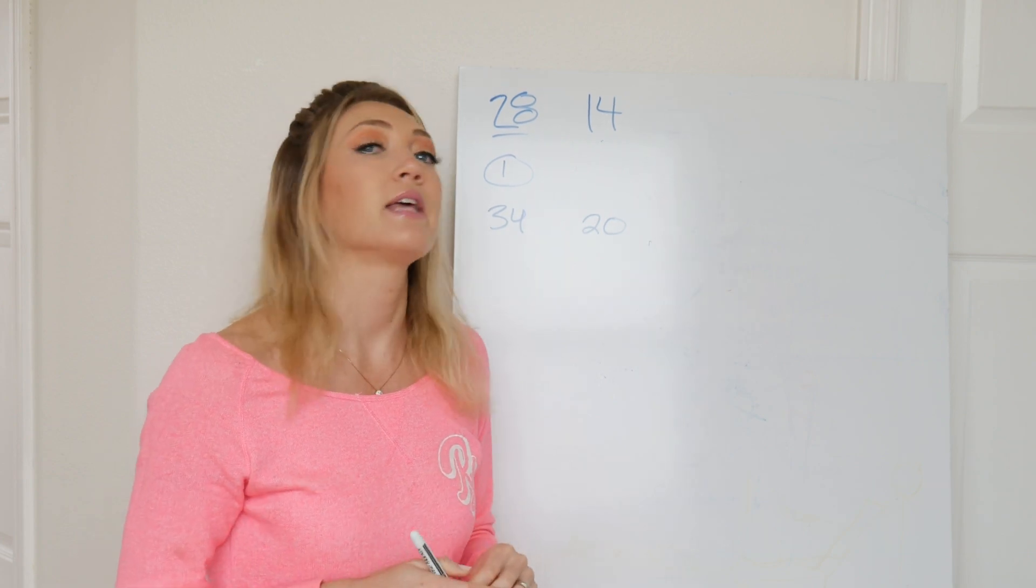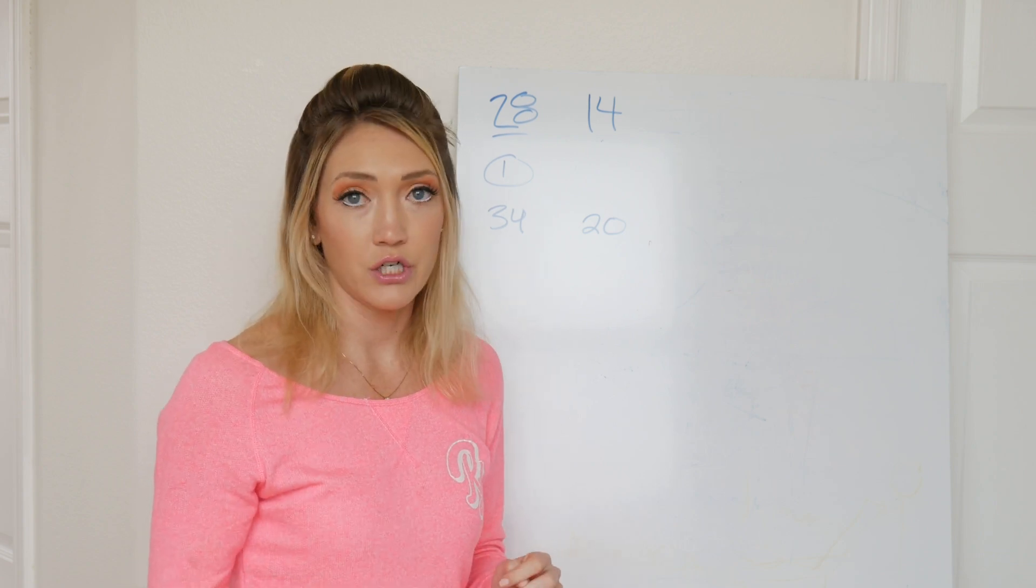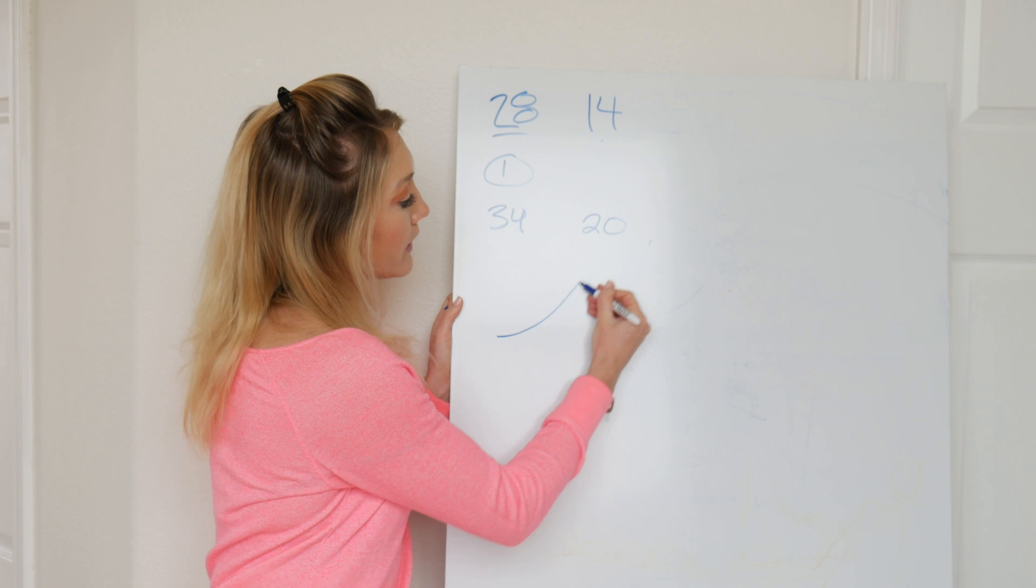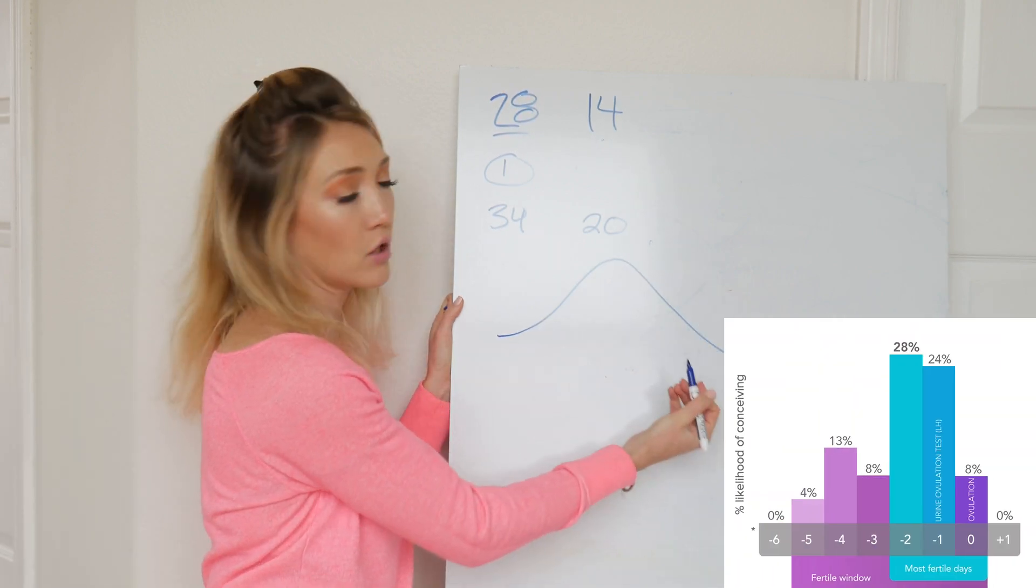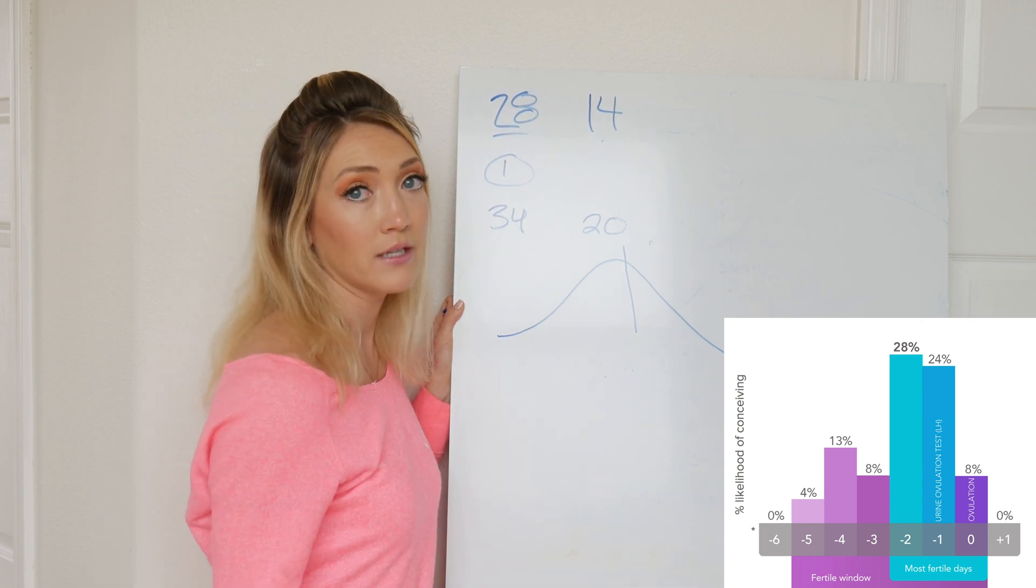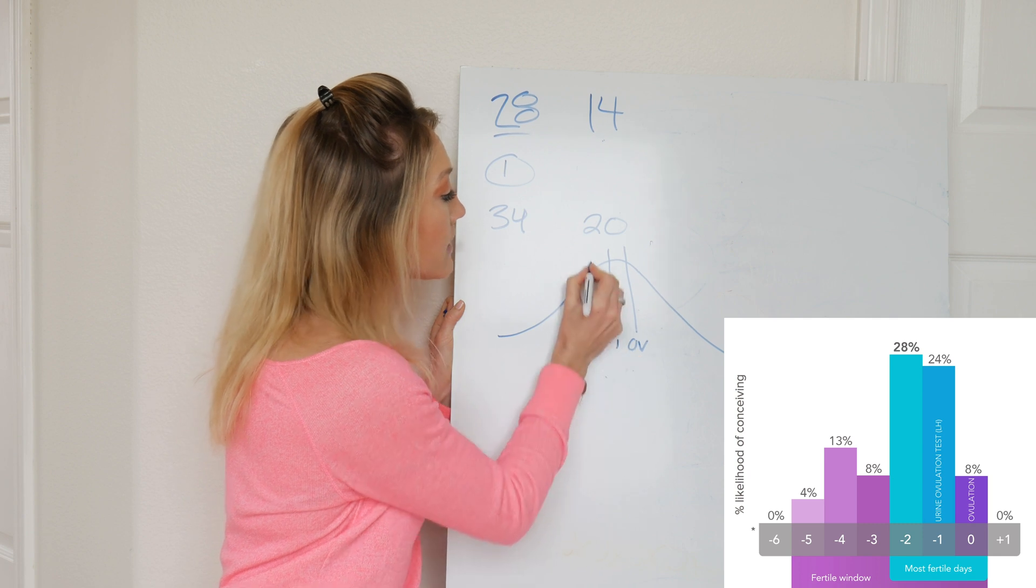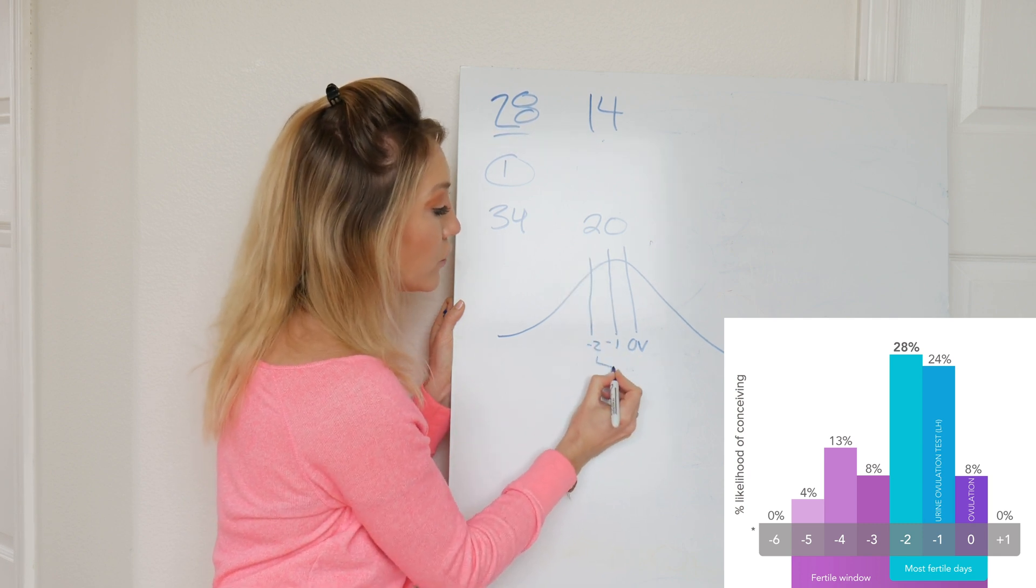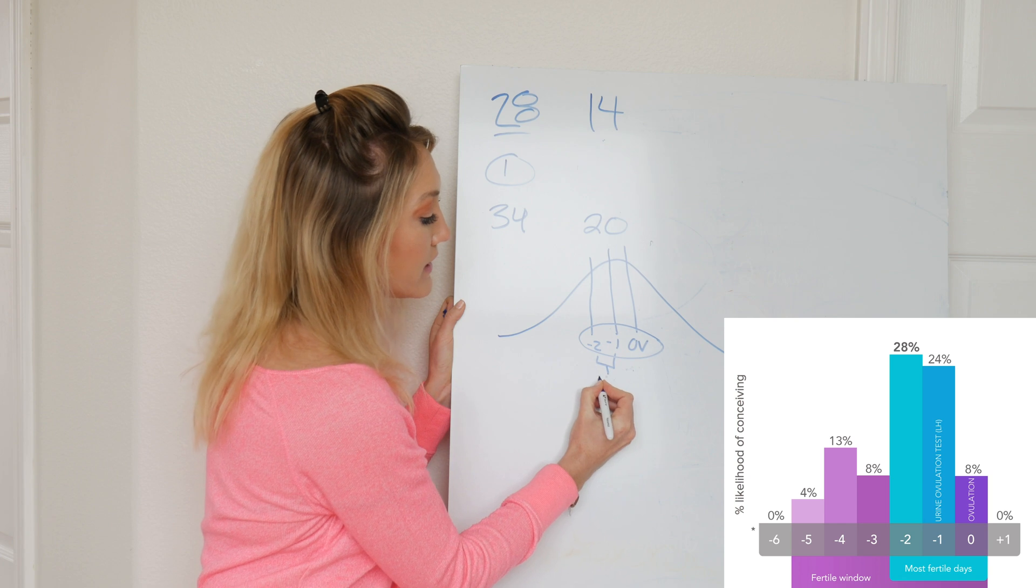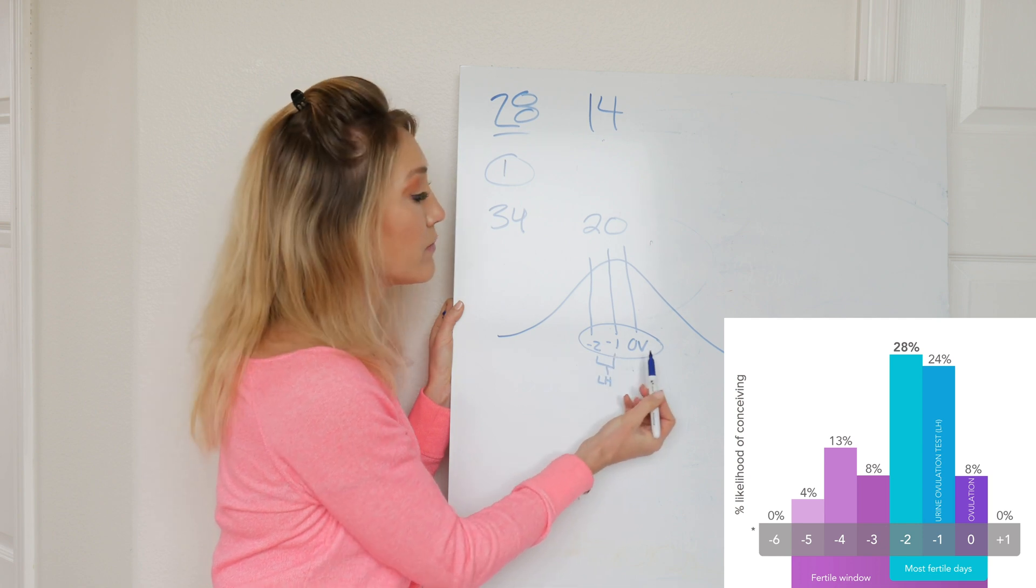Now, what these strips do is they actually detect an LH surge, which you will get if you're ovulating, and that LH surge is going to happen about one to two days before you ovulate. So, your fertile window is almost going to look like this sloped curve right here. Your optimal days for getting pregnant and conceiving and the days that you're going to want to plan to have sex are for sure on your ovulation day and the two days before ovulation.